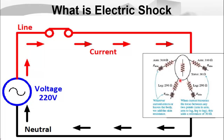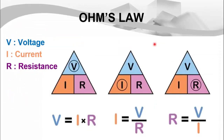The human body is basically a combination of resistance, and how much current is flowing into the body depends on which part of the body is in contact with the exposed metal. To answer this, we have to refer to Ohm's law, which states that voltage is equal to current multiplied by resistance. This means that the current which flows into our body depends on the magnitude of the voltage and the resistance of our body.